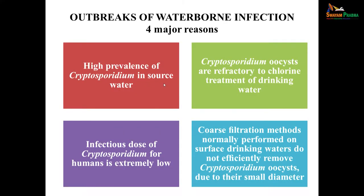There is no vector for Cryptosporidium and we see many outbreaks of waterborne infection. There are four major reasons: high prevalence of Cryptosporidium in water sources; most oocysts are refractory to chlorine treatment of drinking water; most normal filtration methods are not efficient to remove the oocysts due to their small diameter; and the infectious dose for human beings is extremely low. So it is very difficult to avoid infection, which is responsible for so many waterborne infections.